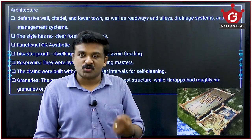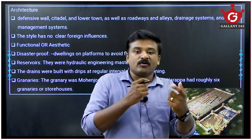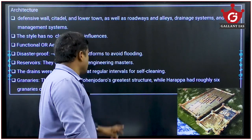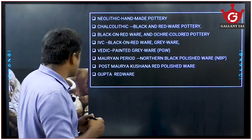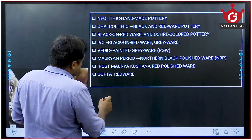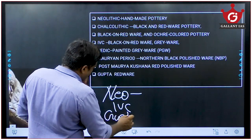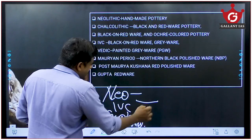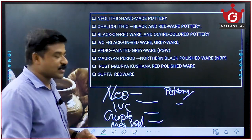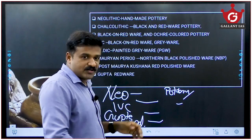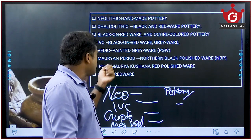This civilization was sustainable for centuries through economic self-sufficiency. Regarding Harappan pottery — UPSC can ask match-the-pair questions pairing each age or civilization with its pottery. Neolithic age used handmade pottery; Chalcolithic used black and red ware; IVC used black-on-red ware and grey ware. Vedic age used Painted Grey Ware (PGW).